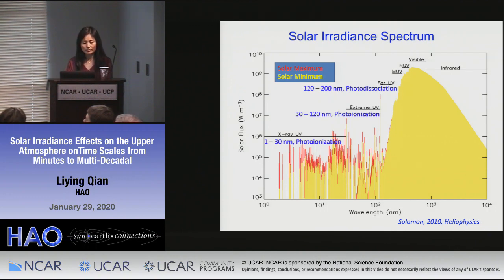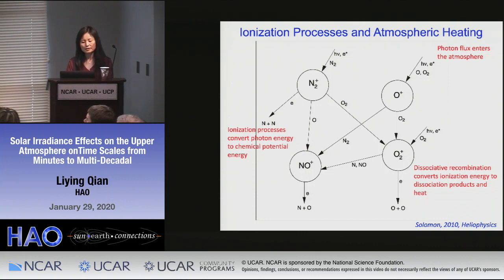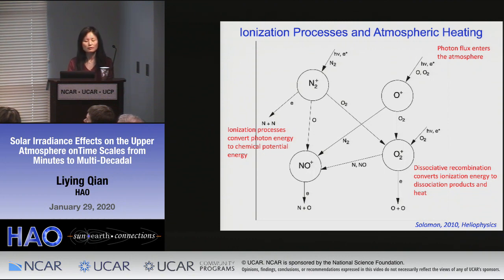Here the red color indicates solar flux at solar minimum and the other red color is solar flux at solar maximum. Solar irradiance comes in and ionizes O, O2, and N2 to produce ions. These ions react with neutrals, and eventually the molecular ions recombine with electrons back to neutral. In this process, photon energy is converted to chemical potential energy, which is then released as heat and heats the thermosphere.